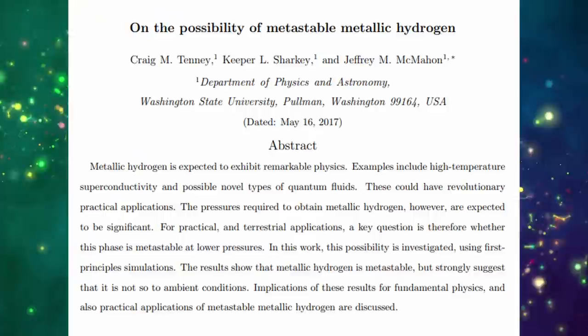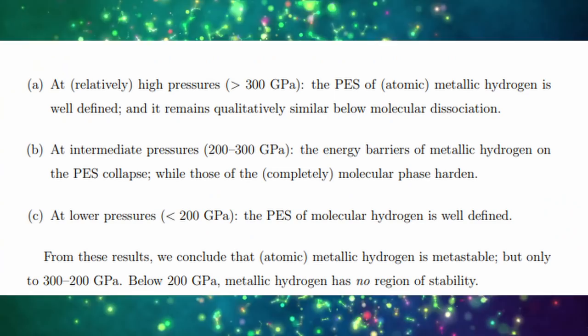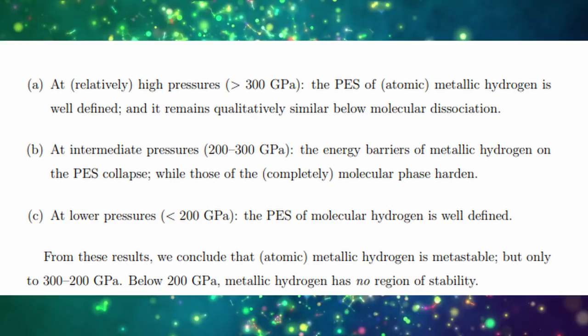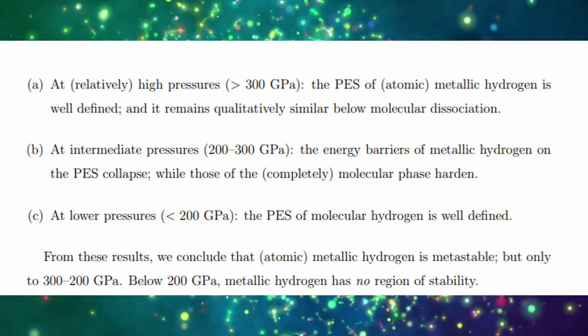In a recent paper they looked to analyse this question through a theoretical approach. Their conclusions were that at relatively high pressure, so above 300 GPa, you would indeed see metallic hydrogen, but as the pressure decreased the structure would switch back to a molecular one. Below 200 GPa, metallic hydrogen had no region of stability.